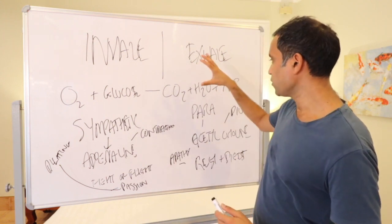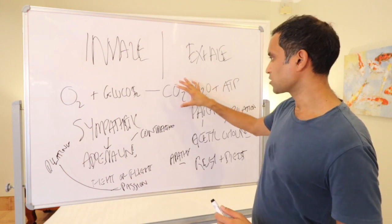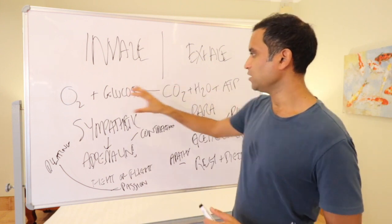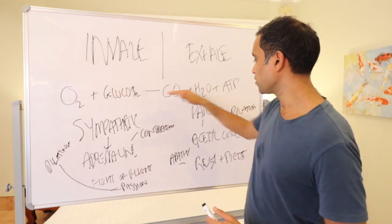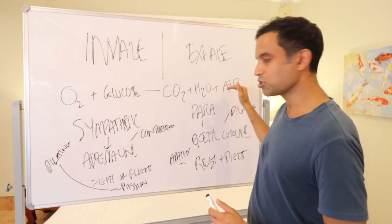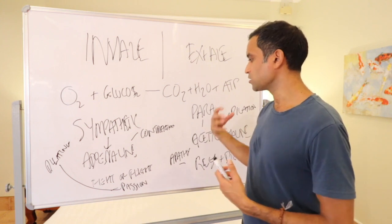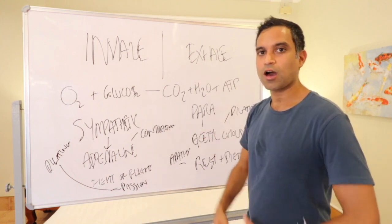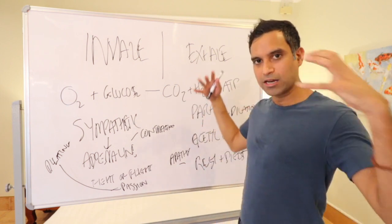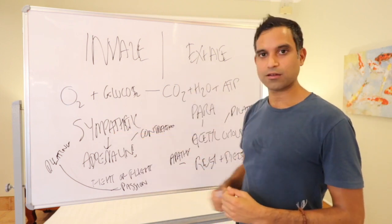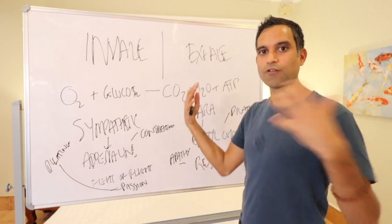But ultimately, when we raise carbon dioxide, we actually slow down the production of energy. So energy is associated with our emotions. So high emotion and high energy is a sympathetic response, high vibration, high vibrational energy.